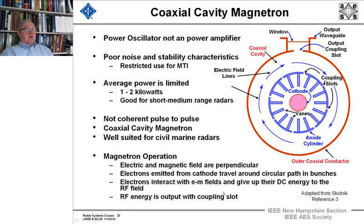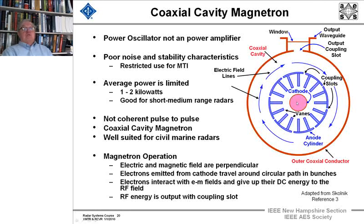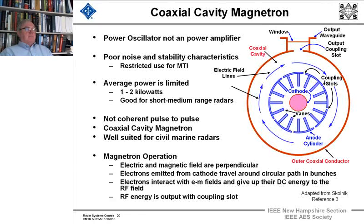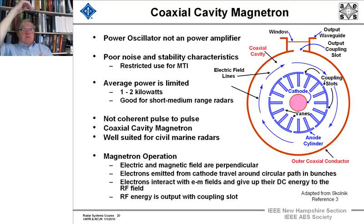Now we're going to look, after that break, at coaxial cavity magnetrons. These were the first microwave devices used for RF energy in the microwave region. They go back to World War II and the famous Tizard mission where Britain had developed a cavity magnetron — not quite this design, but it's a power oscillator, a free-running device. There is no coherency from pulse to pulse.